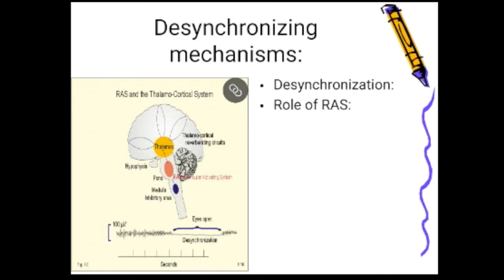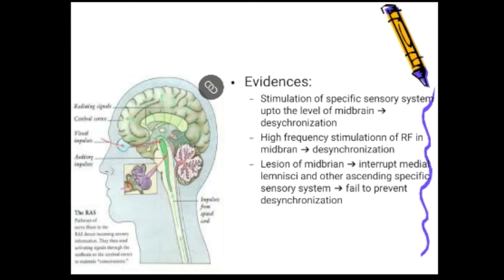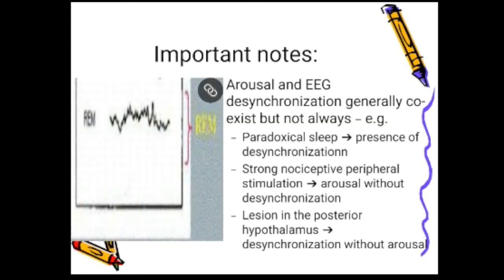Desynchronization is the replacement of rhythmic EEG with irregular low-voltage activity. The reticular activating system is responsible for desynchronization following sensory stimulation. Evidence: stimulation of specific sensory systems up to midbrain level produces desynchronization; high-frequency stimulation of the reticular formation also produces desynchronization. Important notes: arousal and EEG desynchronization usually coexist, but exceptions exist — paradoxical sleep shows desynchronization without wakefulness; strong nociceptive stimuli can cause arousal without desynchronization; lesion in posterior hypothalamus produces desynchronization without arousal.